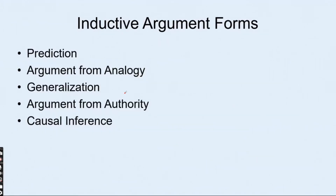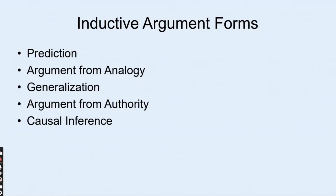Moving to inductive argument: it is based on prediction, argument from analogy, and generalization. Prediction means drawing conclusions about the future based on knowledge of the past — we cannot say with 100% certainty what will happen in the future. Argument from analogy is based on similarity — when two things share the same states of affair, we draw a conclusion from that similarity.